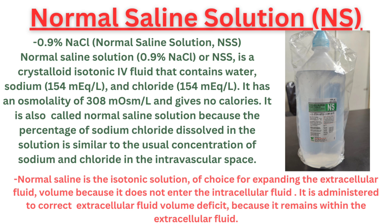Normal saline solution contains 0.9% NaCl. It is a crystalloid isotonic IV fluid that contains water, sodium at 154 mEq per liter, and chloride at 154 mEq per liter. It has an osmolality of 308 and gives no calories. It is also called normal saline solution because the percentage of sodium chloride dissolved in the solution is similar to the usual concentration of sodium and chloride in the intravascular space.